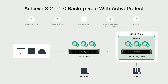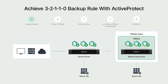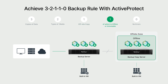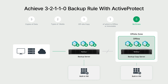Let's summarize how Active Protect implements the 3-2-1-1-0 strategy. You have three copies stored on two different media, including one off-site. Immutable and air-gapped backups protect against threats, while multi-layered verification keeps your data fully recoverable with no errors.